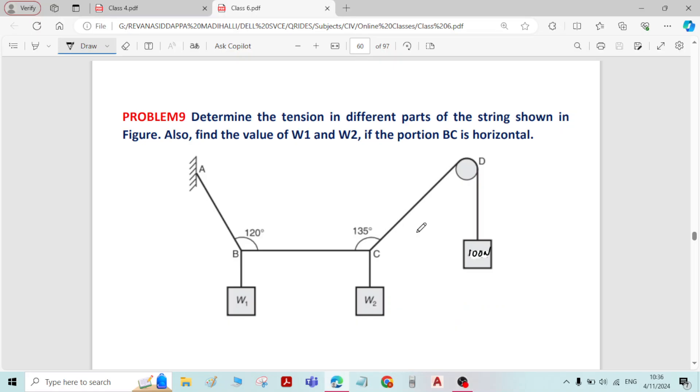Hi, so this is problem number 9 on equilibrium of forces. Here we have to determine tension in different parts of the string shown in figure and we should also find the value of W1 and W2 if the portion BC is horizontal.